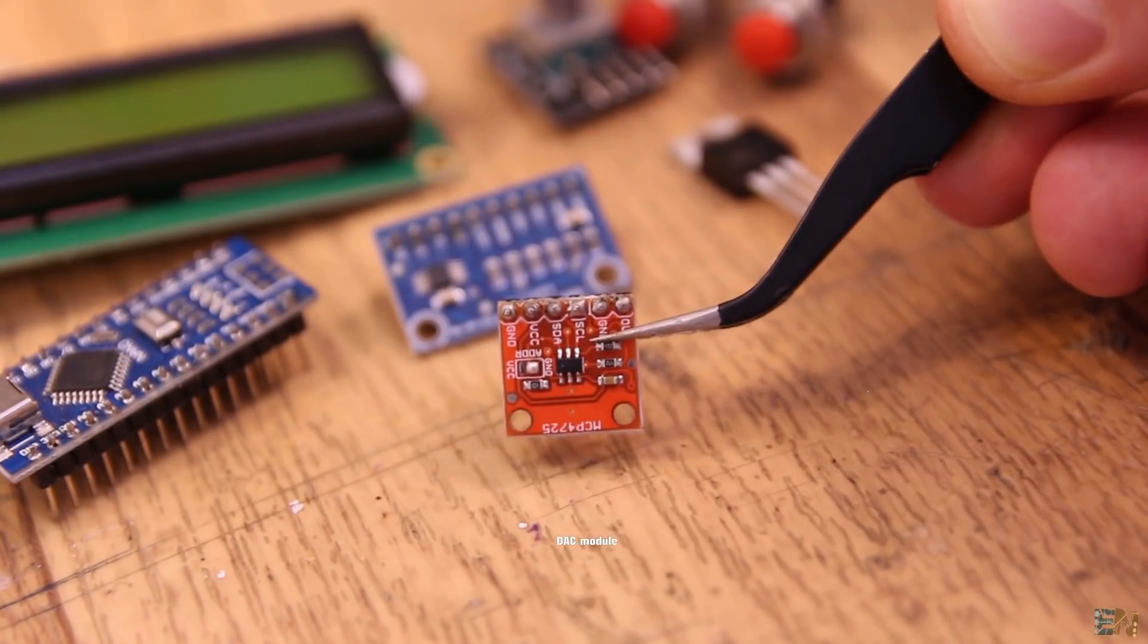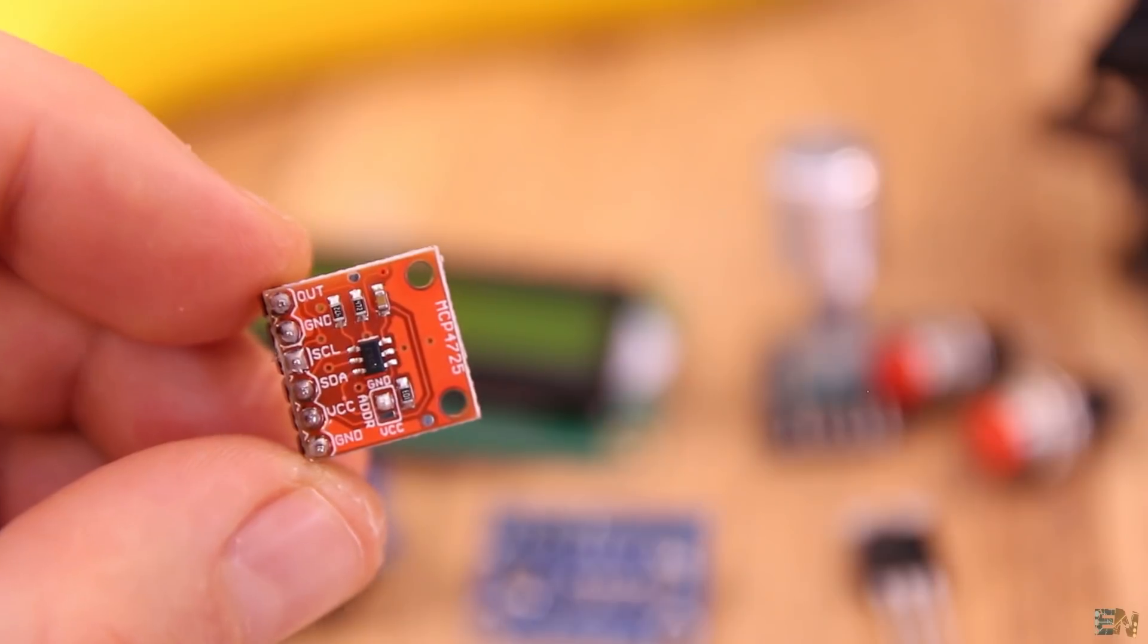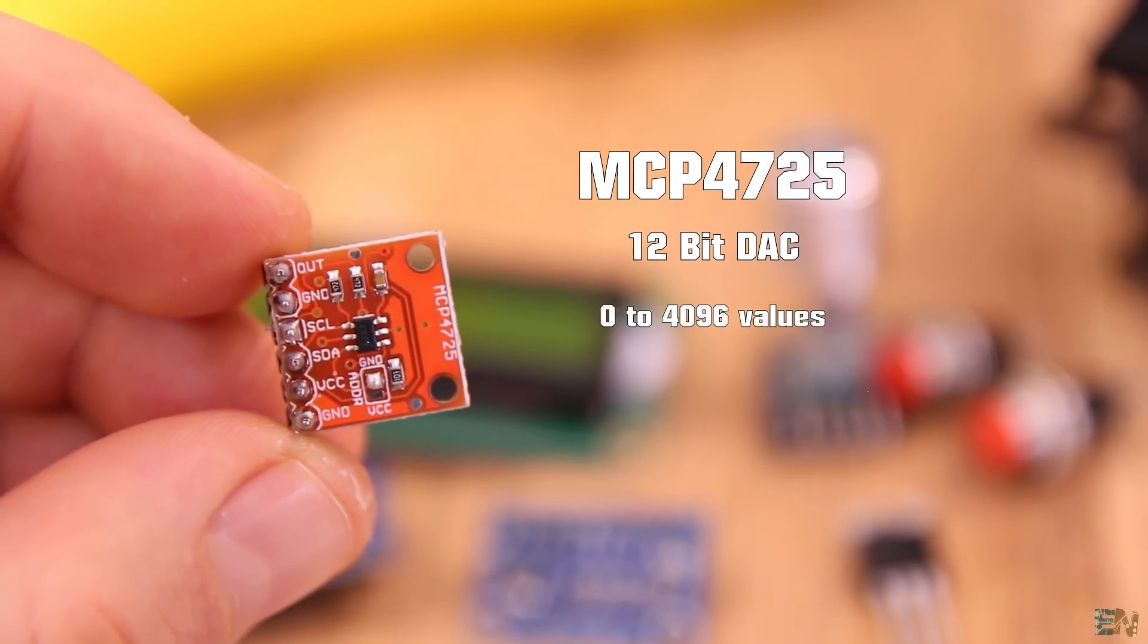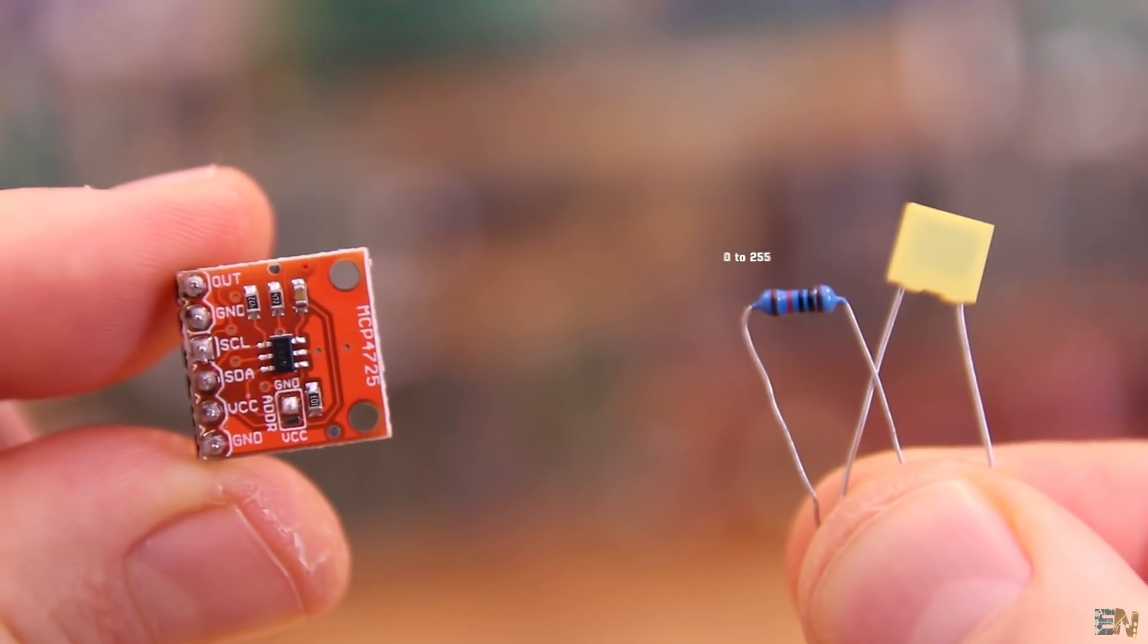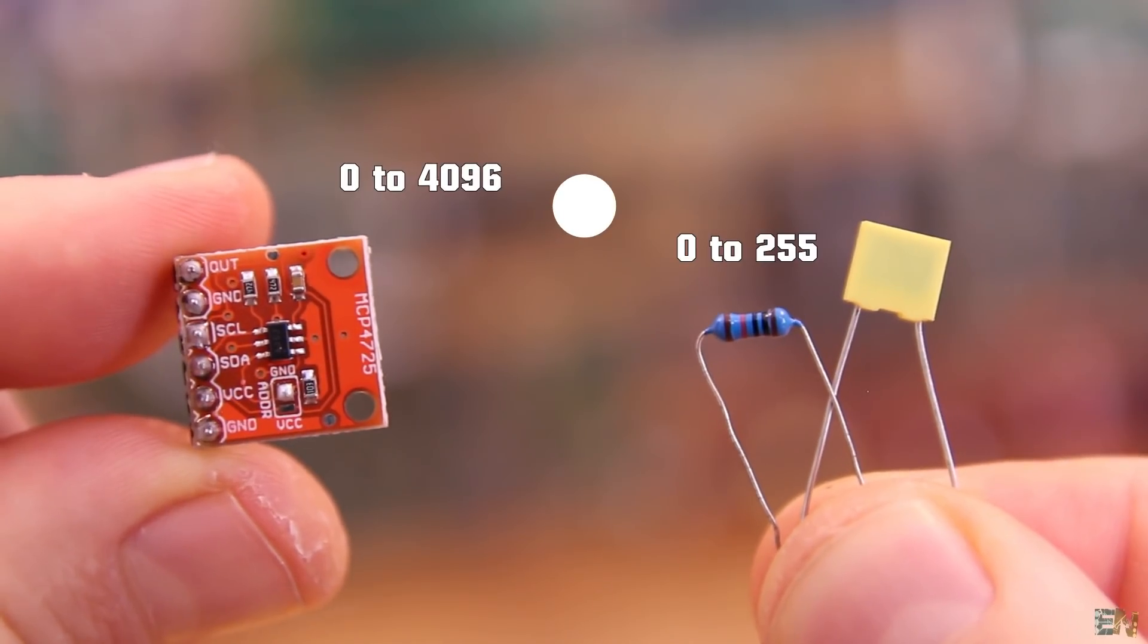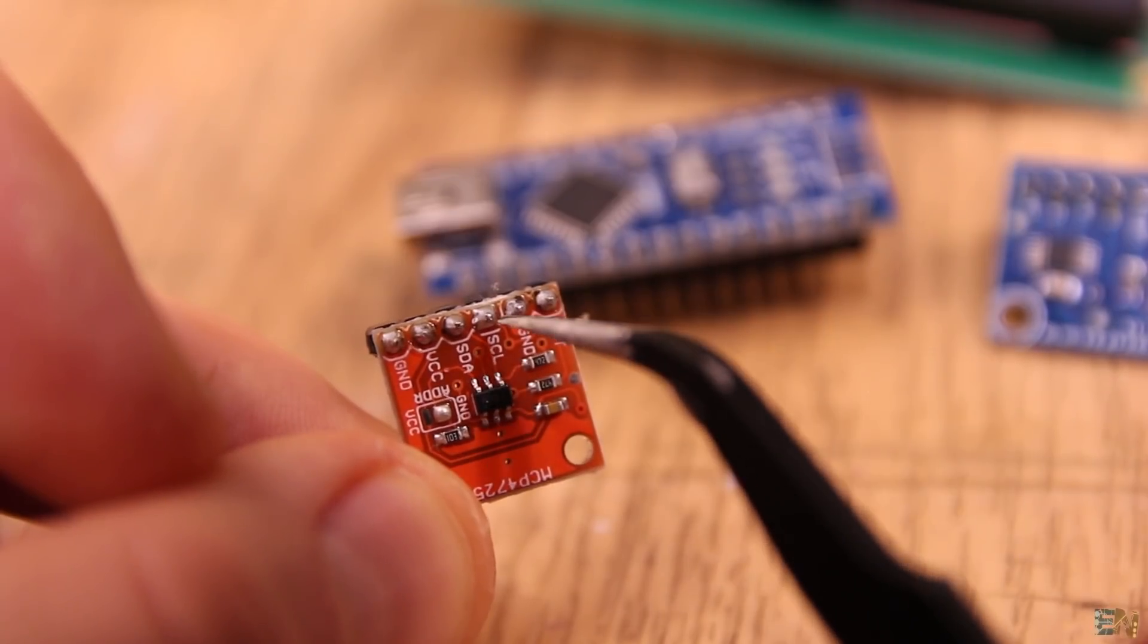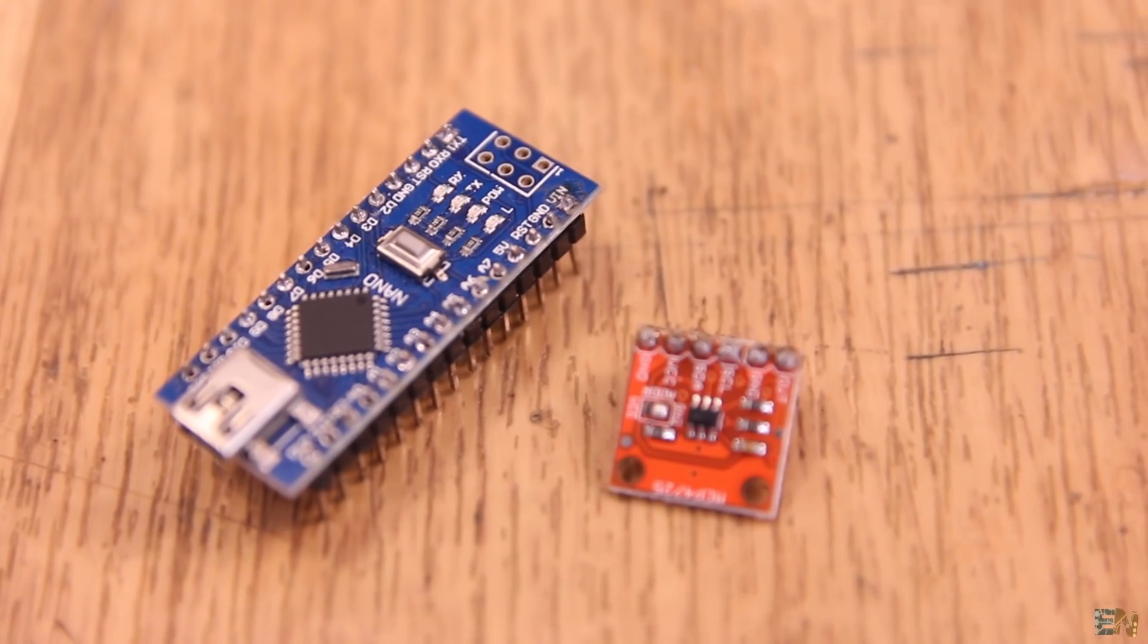This one here is the MCP4725 and this has 12 bits. So that means that we have 4096 points to control, compared with only 255 values if we were to use the PWM signal from the Arduino. This module is controlled with I2C communication, so it's very easy to control. Just install the library and start sending values.